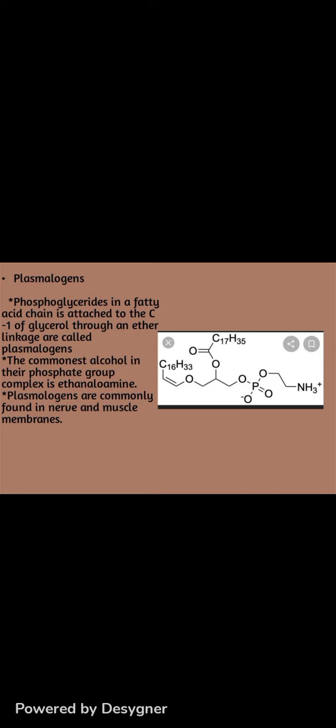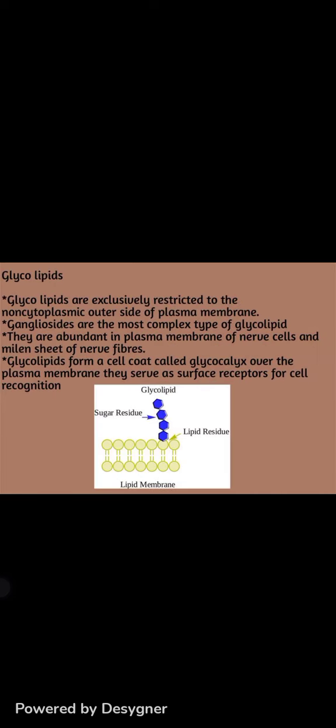The next one is plasmalogens. Plasmalogens are phosphoglycerides in which a fatty acid chain is attached to the C1 of a glycerol through an ether linkage. The commonest alcohol group attached to their phosphate group is ethanolamine. Plasmalogens are commonly found in nerve and muscle membranes.